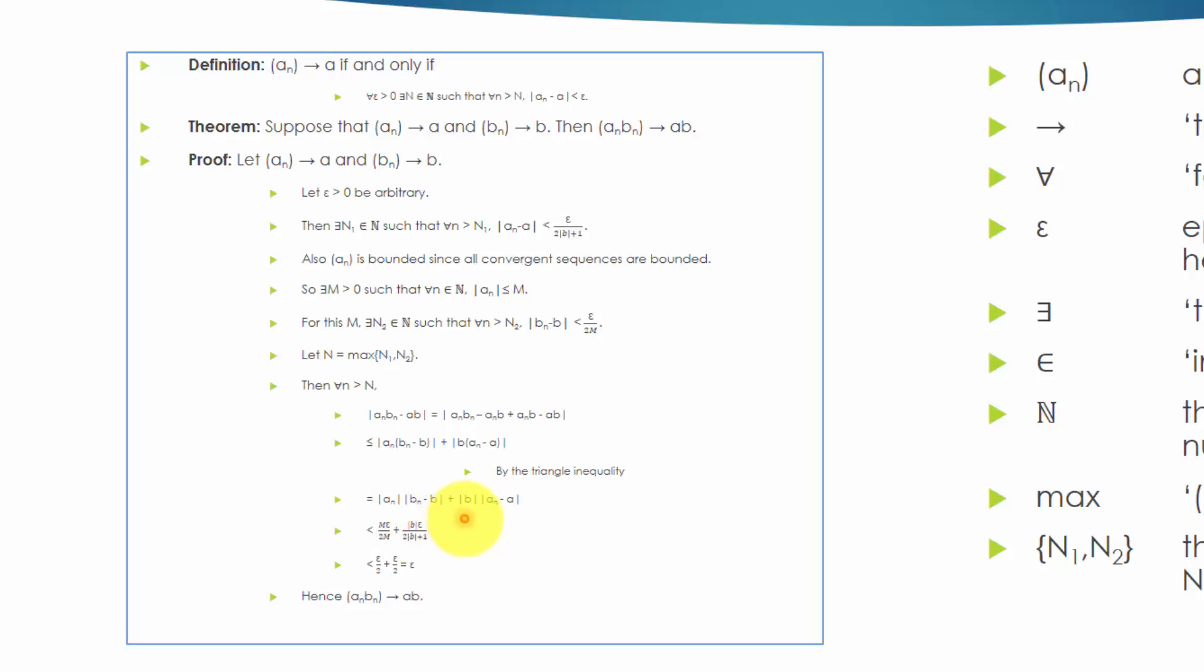which is less than big M times epsilon over 2M, plus the absolute value of B times epsilon over 2 times absolute value of B plus 1, which is less than epsilon over 2 plus epsilon over 2, which equals epsilon.